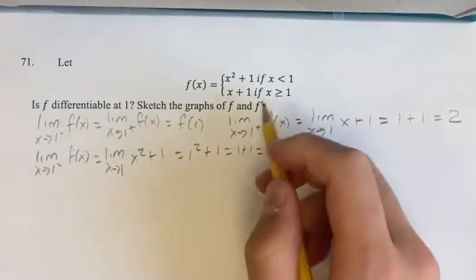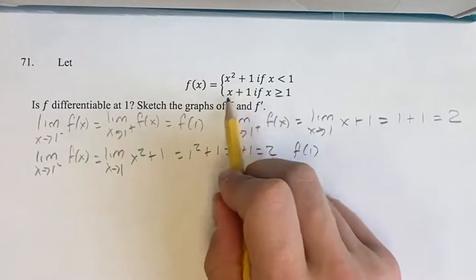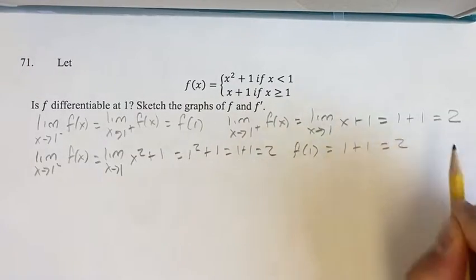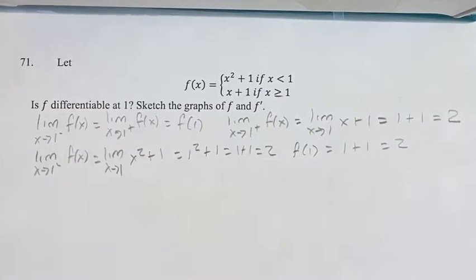We also have to find f of 1. And since it's greater than or equal here, that means when it's equal to 1, it's x plus 1. Therefore, it's 1 plus 1, it's 2. Therefore, f is continuous at 1.